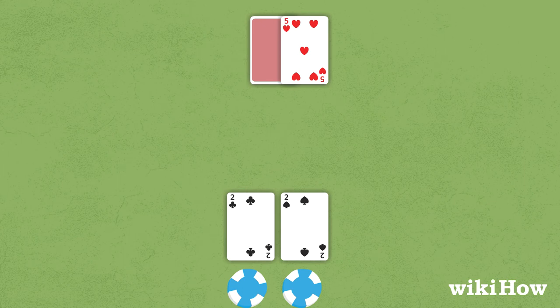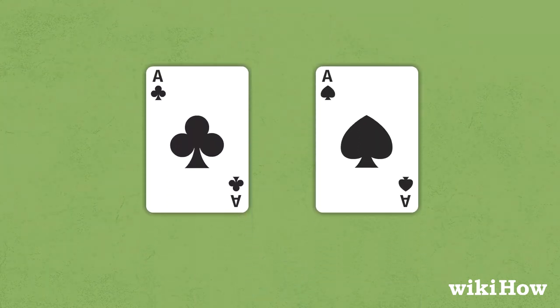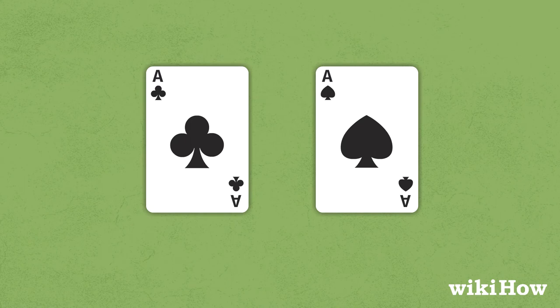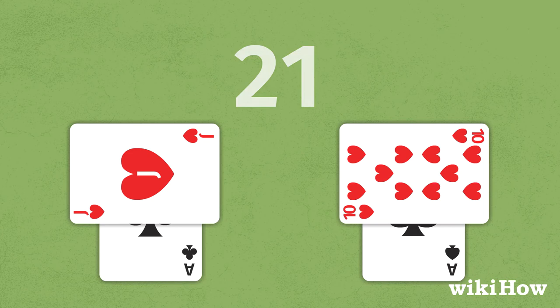Some types of pairs should be split no matter what the dealer is holding. For instance, it's always a good idea to split a pair of aces. With a split pair of aces, you can get a 21 with either hand if you get a 10 or any face card.